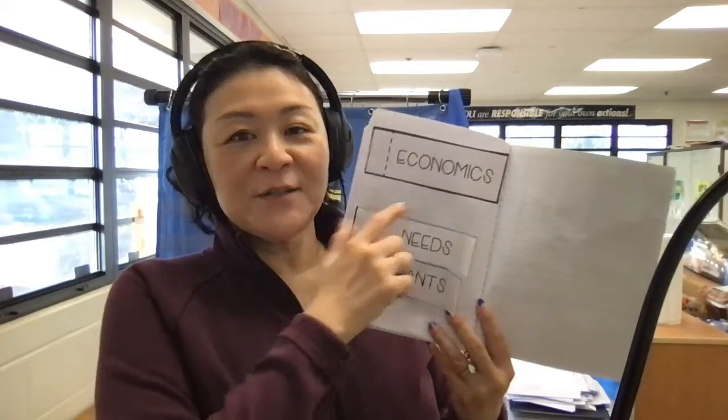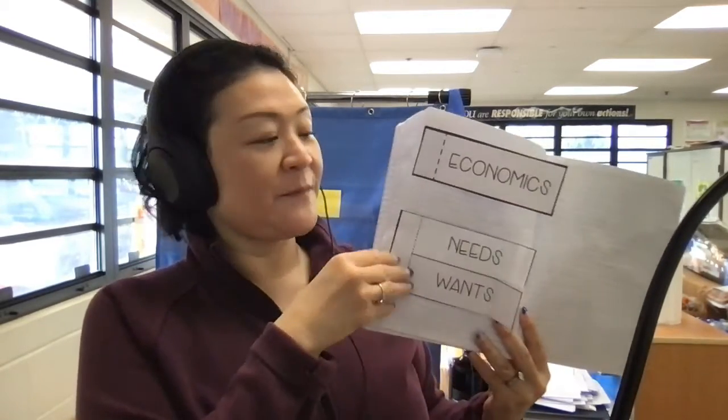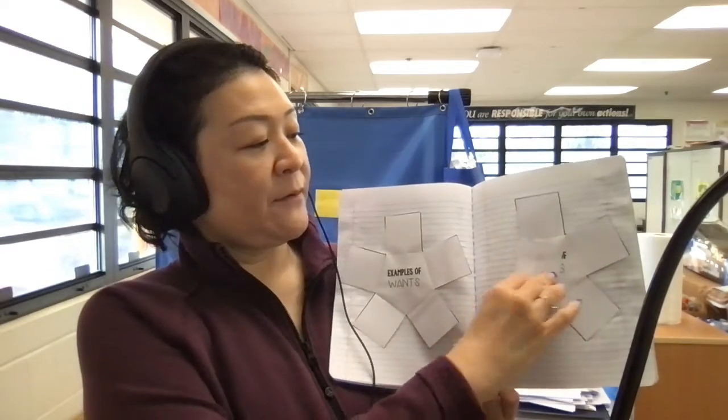So the first page is going to be your economics flap and your needs and wants. The second page will be your needs and wants crunch wrap. Okay, so you can fold them up or leave them open, whatever works.